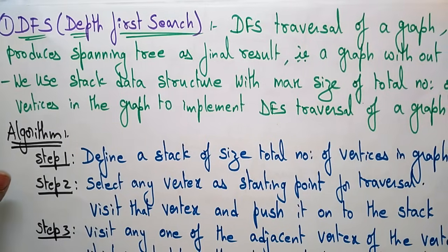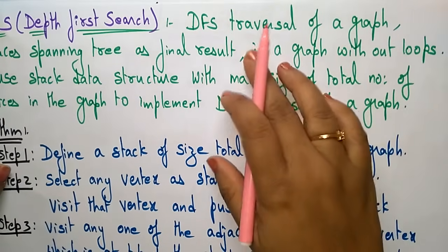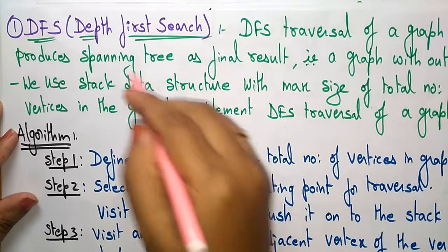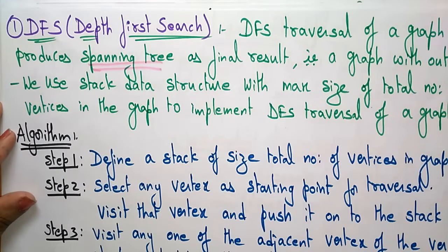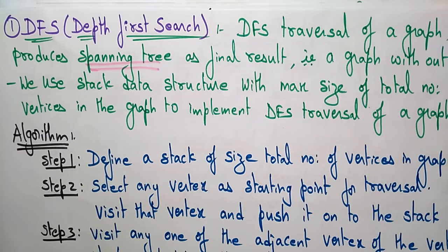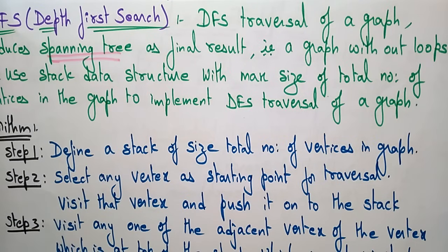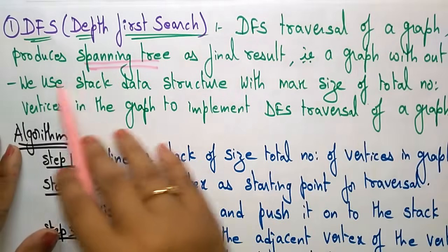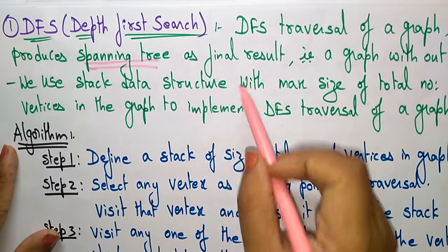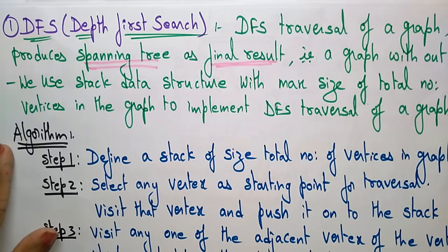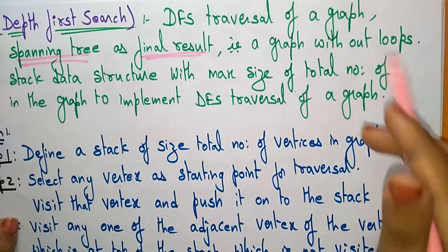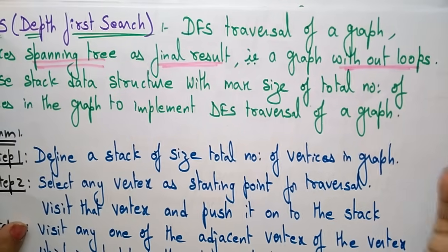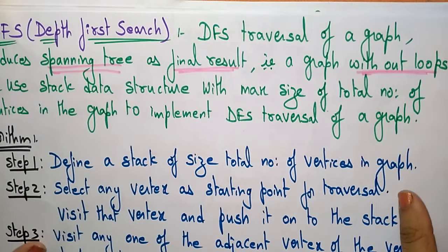DFS stands for depth first search. The depth first search traversal of a graph produces a spanning tree as the final result when visiting all nodes. A spanning tree is a graph without loops — the graph is a completely connected graph, but the spanning tree is open and without loops.